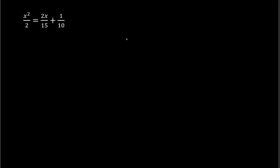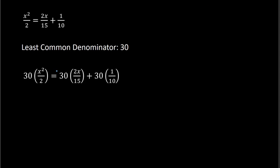Here is one final example where now we have a quadratic expression — we see an x squared this time. It's all the same process: we want to get rid of the fractions by multiplying by the least common denominator. We see denominators of 2, 15, and 10, and the least common denominator of all of those would be 30. Multiplying every part by 30: 30 divided by 2 gives 15, 30 divided by 15 gives 2, and 30 divided by 10 gives 3. So I now have 15x squared equals 2 times 2x, which is 4x, plus 3 times 1, which is 3.